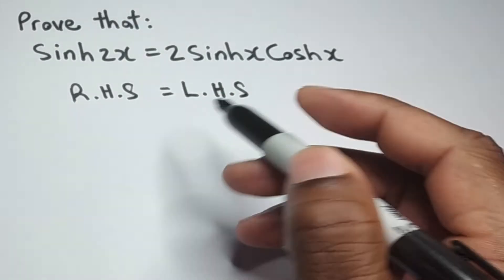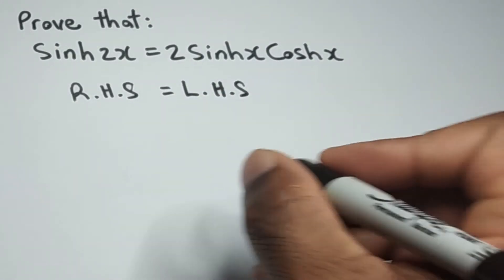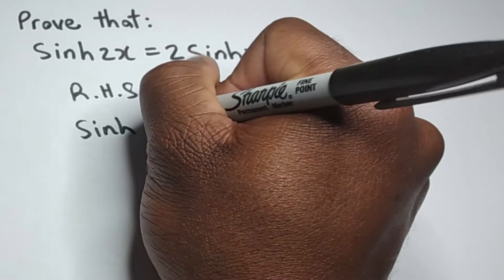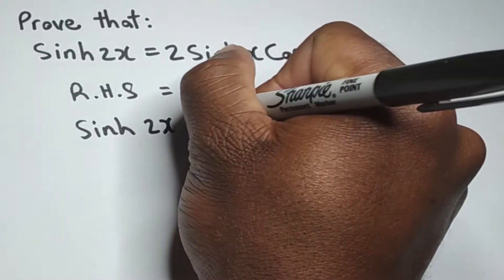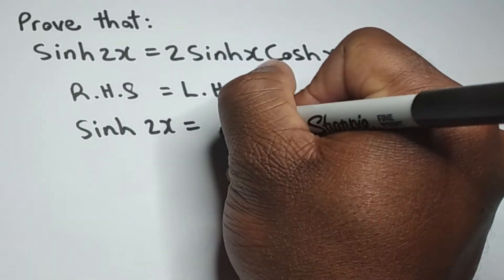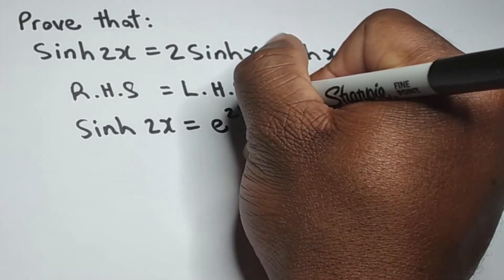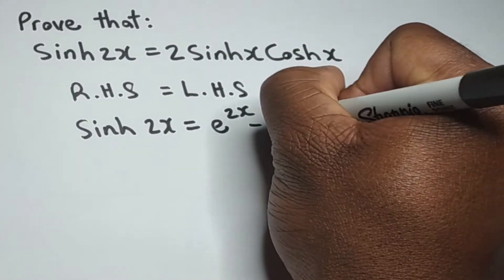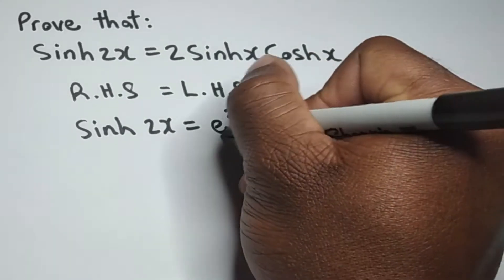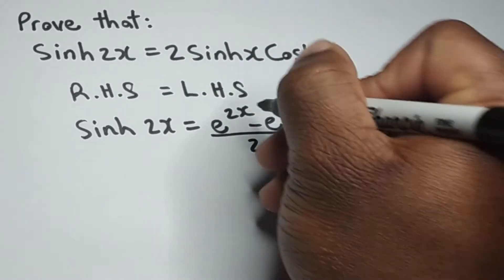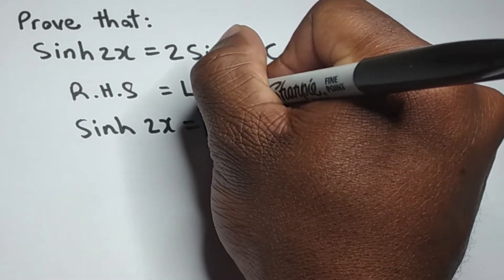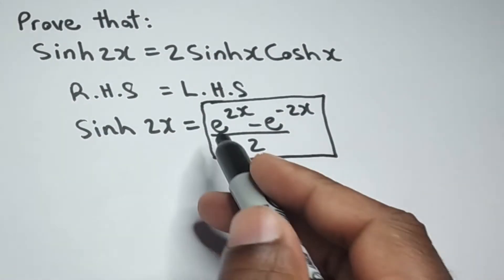Before we get into that, let's first see what the definition for hyperbolic sine of 2x looks like. We'll end up with e to the 2x minus e to the minus 2x over 2. This is the definition for hyperbolic sine of 2x.